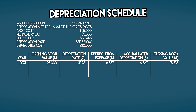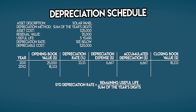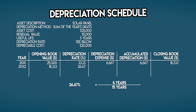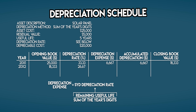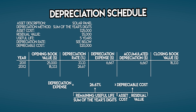Now we'll repeat the process for year two. Your closing book value in year one becomes your opening book value in year two. Your depreciation rate is remaining useful life divided by sum of the year's digits. In year two, remaining useful life has reduced to four years; sum of the year's digits is still 15. So four divided by 15 gives an SYD depreciation rate of 26.67 percent. Depreciation expense is 26.67% multiplied by $20,000, which is $5,333. Accumulated depreciation is $12,000 and closing book value is $18,333 minus $5,333, which is $13,000.